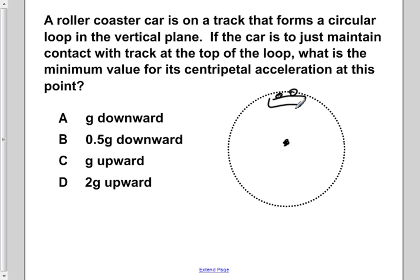There is no normal force acting on our object. We have the weight pulling down and the centripetal acceleration, the net acceleration, pointing downward. With that being said, the normal force is equal to zero.